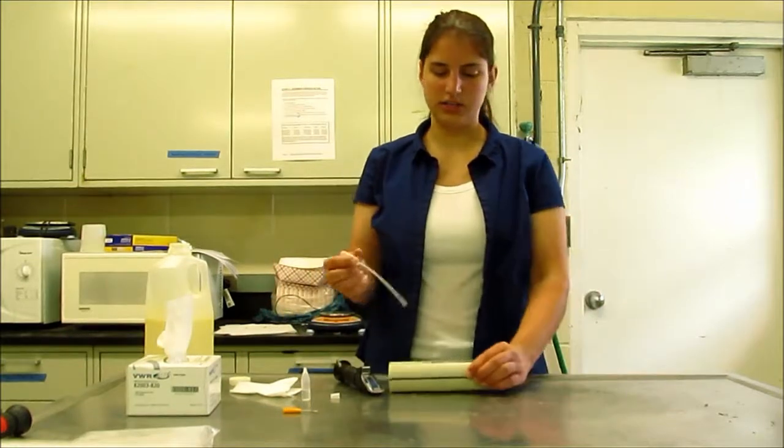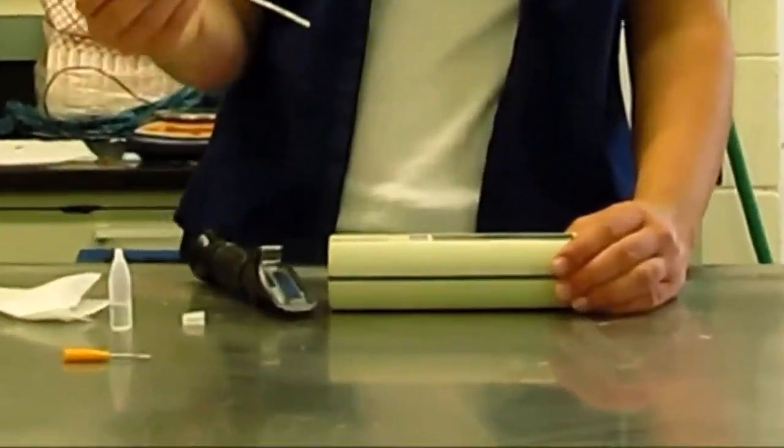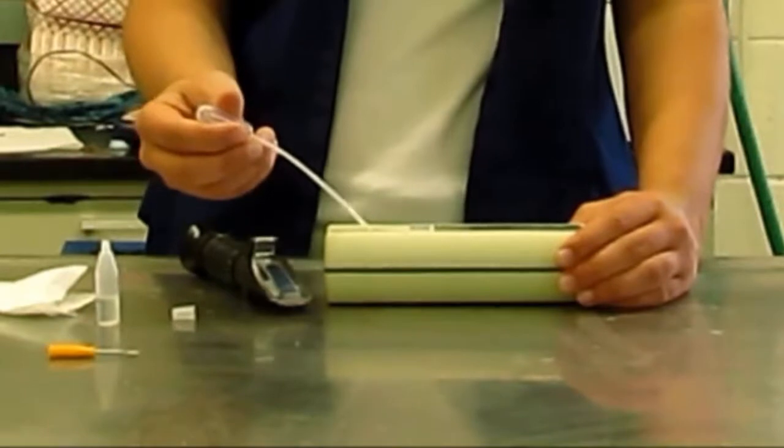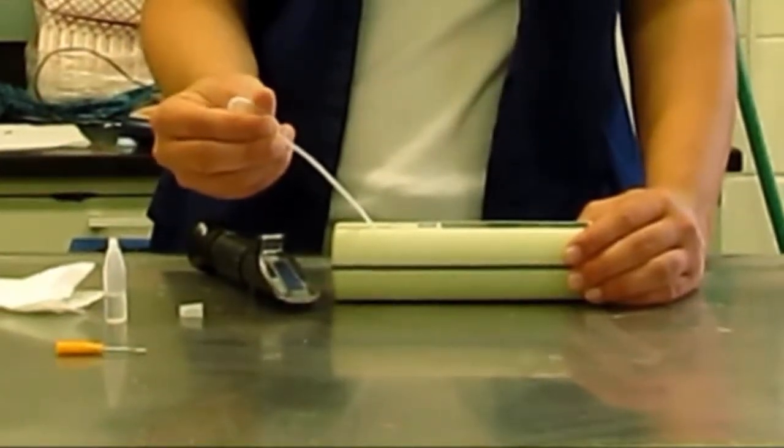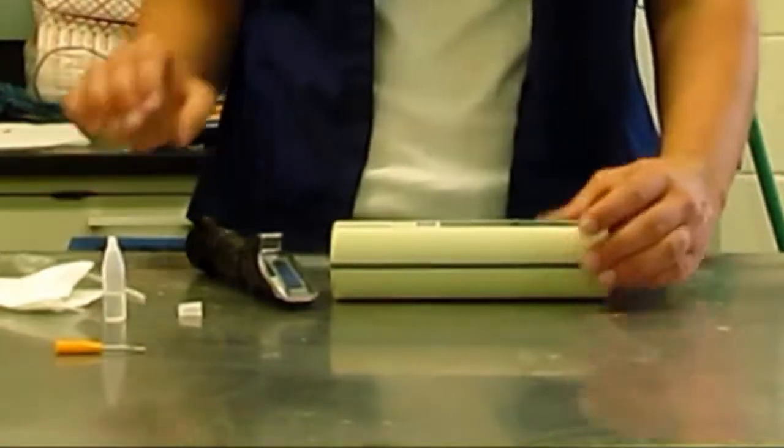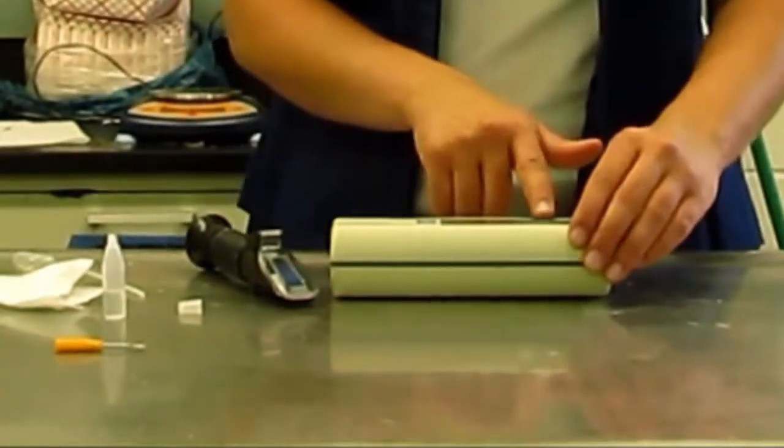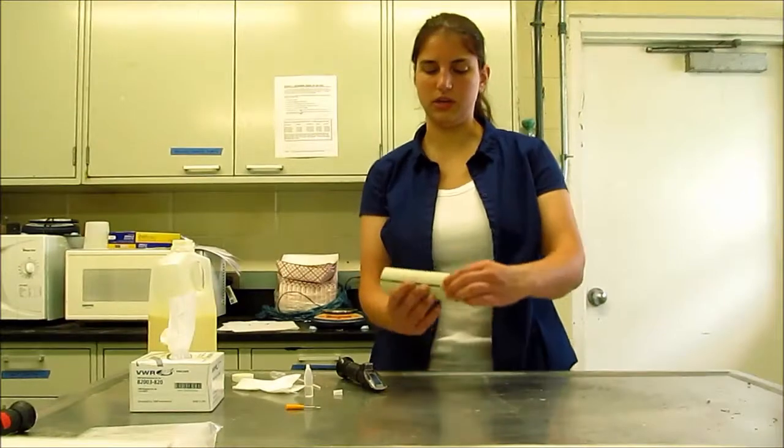Similarly, on the digital refractometer, the same type of thing, it's just a little bit more precise. You're going to put a couple of drops on the surface of the refractometer, just so it's covered. It only takes one or two drops. And then you simply press the measure button, and it'll give you a reading.